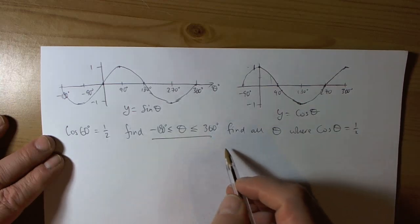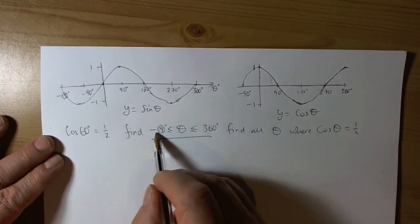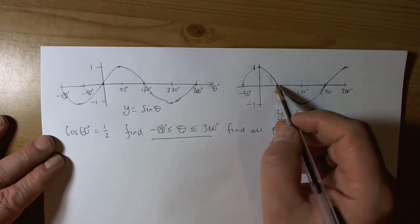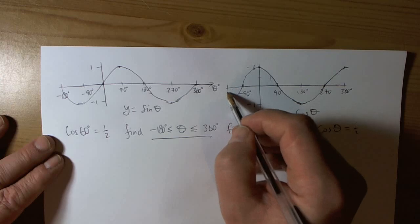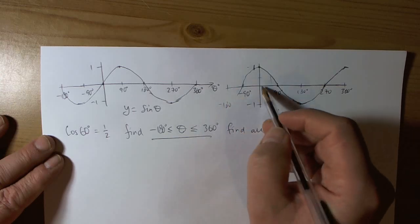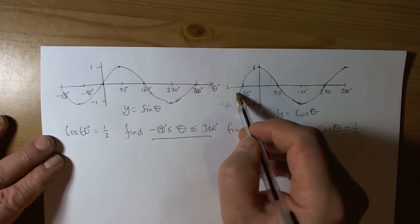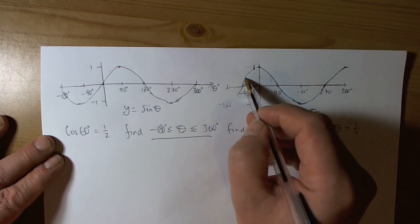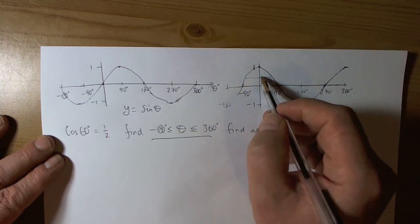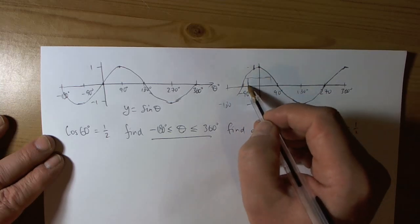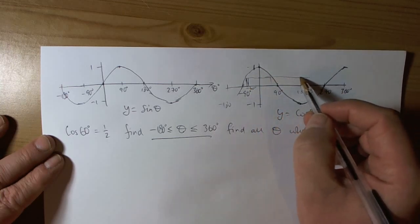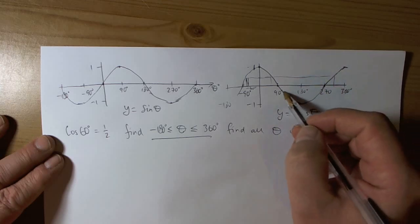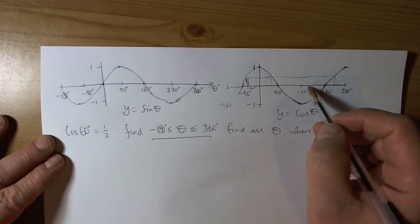And then we think to ourselves, it's asked us to work in the domain of minus 180 up to 360. So we'd have to continue this curve down to the minus 180 area. But we can already see that it's not going to need to go down to there to get a half. We can already see then that the corresponding values are going to be minus 60 degrees. And then we come across here, we can see that we've got another value over.